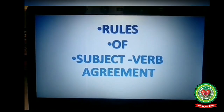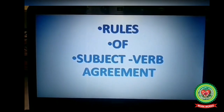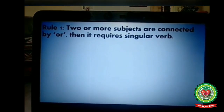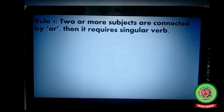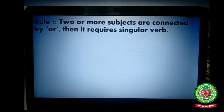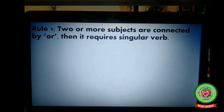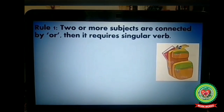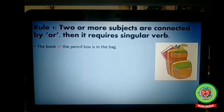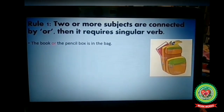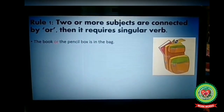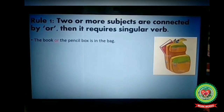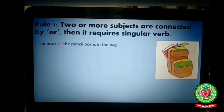Now let's discuss some other rules of subject-verb agreement. Rule number one: when two or more subjects are connected by 'or,' it requires a singular verb. For example, 'The book or the pencil box is in the bag.' Here we are talking about two subjects — the book and the pencil box — joined with 'or,' so we take the singular verb 'is.'